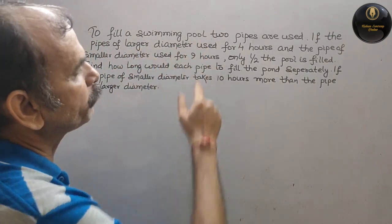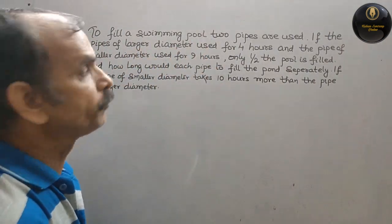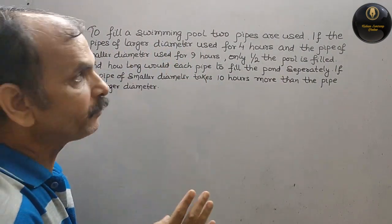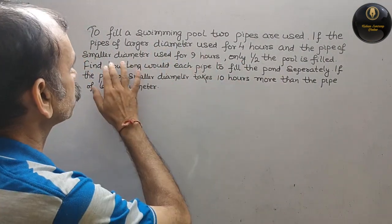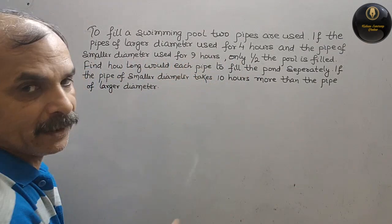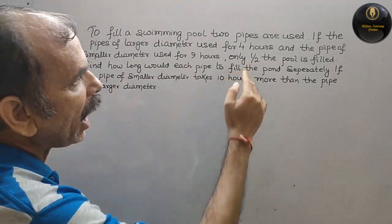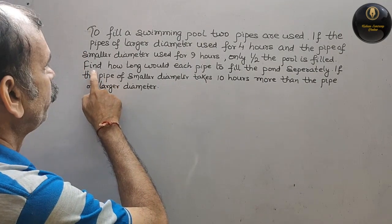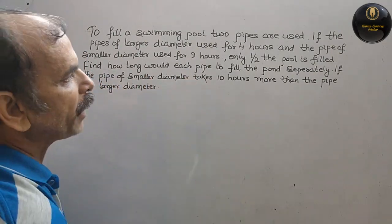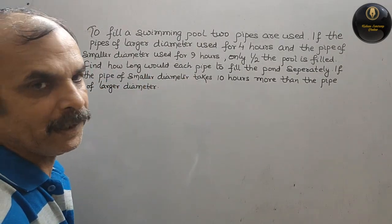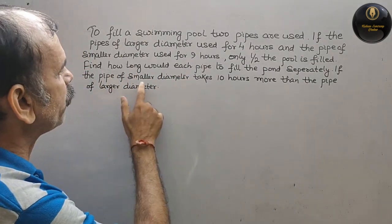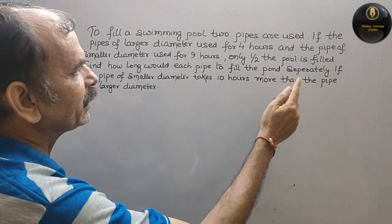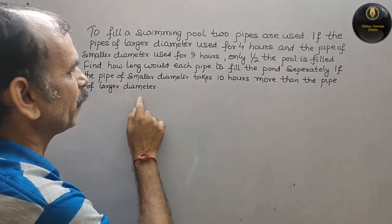To fill a swimming pool, two pipes are used. If the pipe of larger diameter is used for 4 hours and the pipe of smaller diameter is used for 9 hours, only half of the pool is filled. Find how long would each pipe take to fill the pool separately, if the pipe of smaller diameter takes 10 hours more than the pipe of larger diameter.